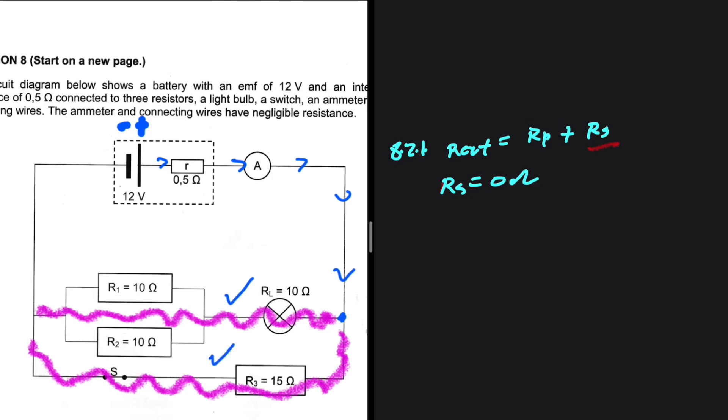But it is a bit deeper than that because on the upper path, we have R1 and R2, which are also in parallel. So we need to find the effective resistance of R1 and R2 first.